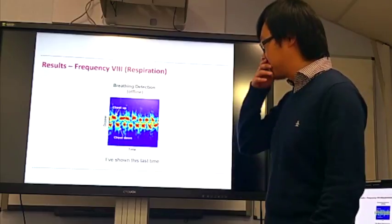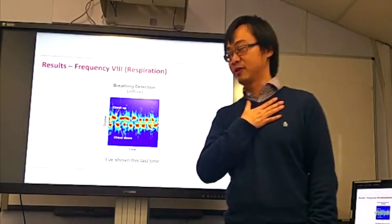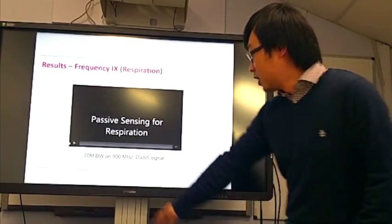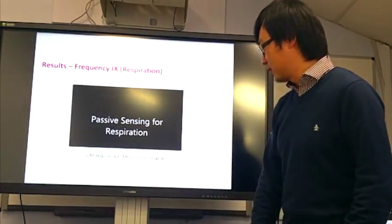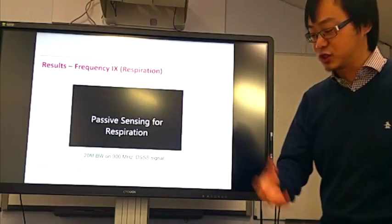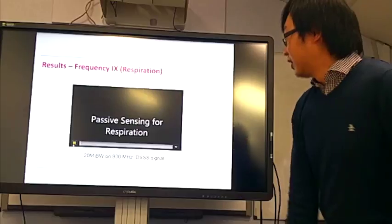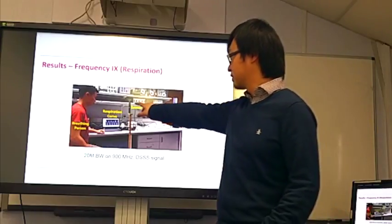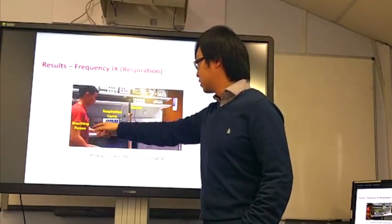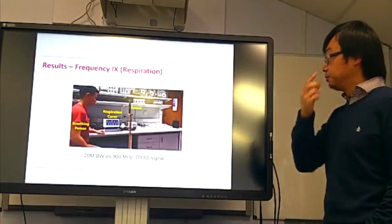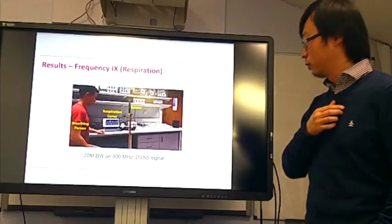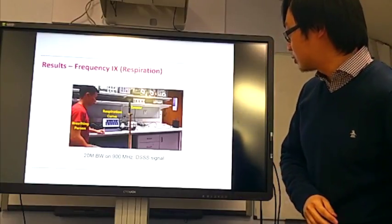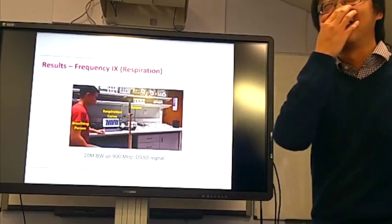So last year I showed this picture that we can use WiFi signal to detect human breathing. I showed this offline processing. This year we got some more results. We used 20 MHz bandwidth signal on 900 MHz frequency, a wireless charging signal, to detect human respiration. Now we make the system real-time. Here is our signal source. Here is our receiving sensor. Here is our experimenter breathing. It shows our breathing curve. Actually we can do this one through the wall because this wireless charging signal source has very strong signal. They have at least 2 watts I think.